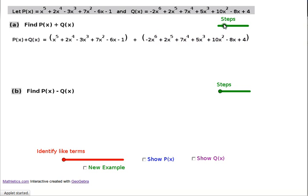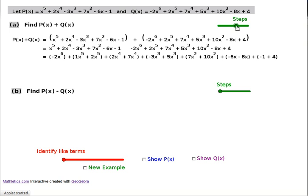Then the next step, I've written it without any brackets, and I've written each of the terms next to each other. So all the x to the sixth terms are next to each other, all the fifth terms, all the fourth terms, all the third terms, all the squared terms, all the plain x terms, and then the numbers.